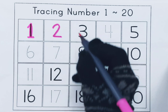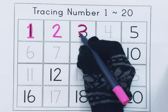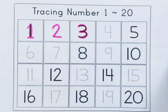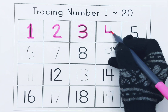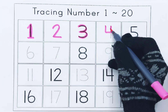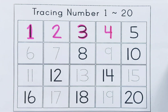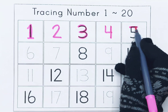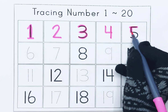This is 3, T H R E E, 3. This is 4, F O U R, 4. This is 5, F I V E, 5.